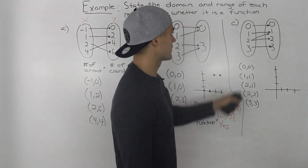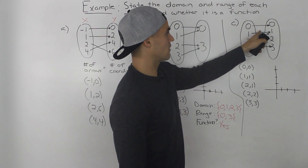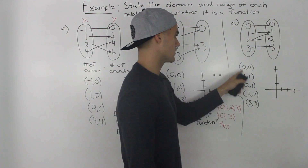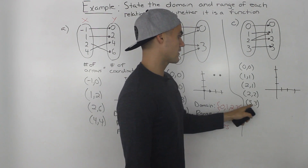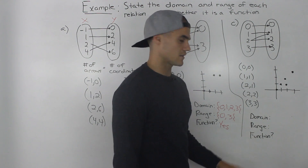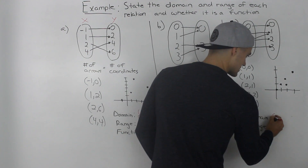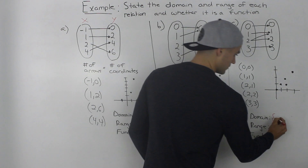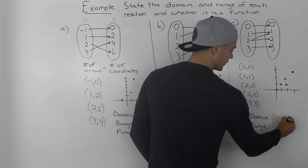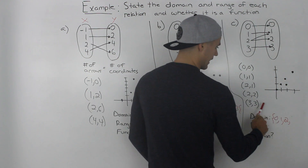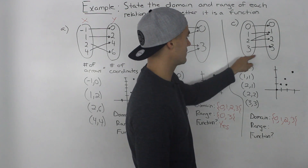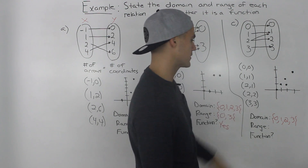Moving on to part C, we have this mapping diagram. Notice there are five arrows, so we're dealing with five coordinates: zero and zero, one and one, two and one, two and two, and three and three. The domain is the list of x values: zero, one, two — which appears twice but we only write it once — and three. We could also look at the first column of the mapping diagram; it's the same thing.